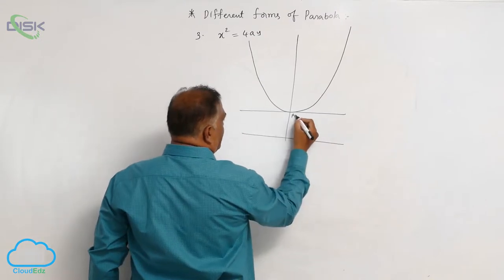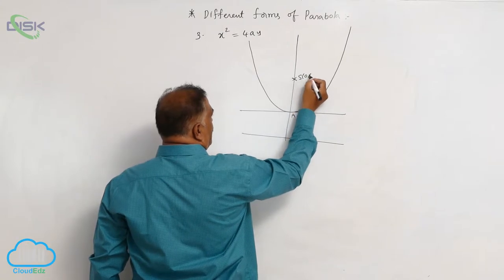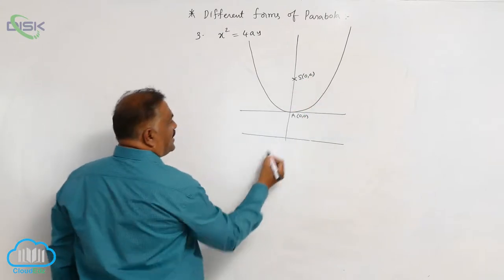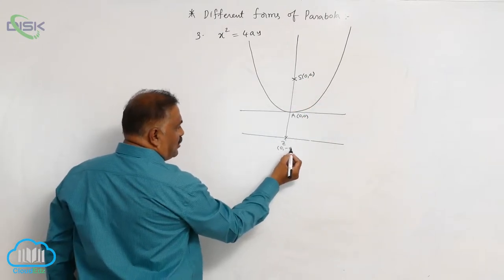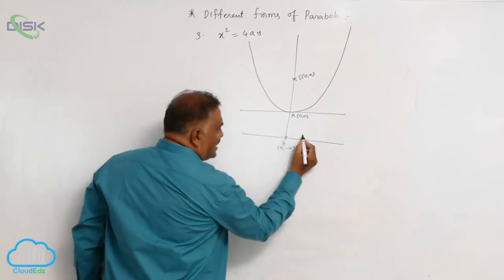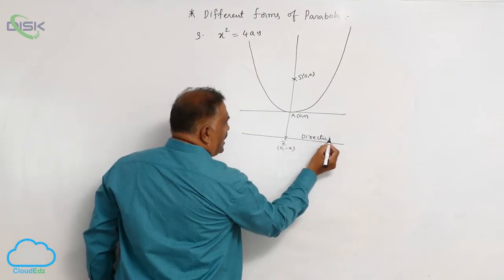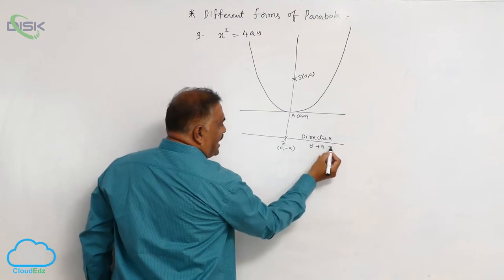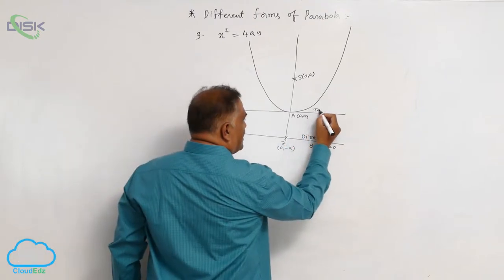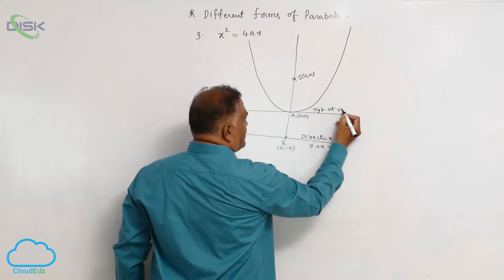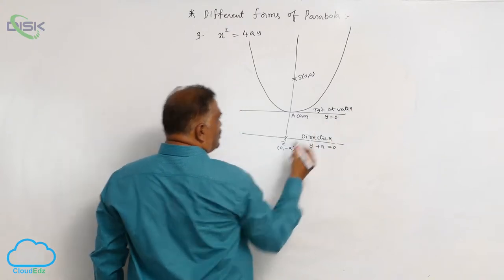The vertex is at (0, 0), the focus is at (0, a), the foot of the directrix is at (0, -a). The directrix equation is y + a = 0. The tangent at the vertex is y = 0.